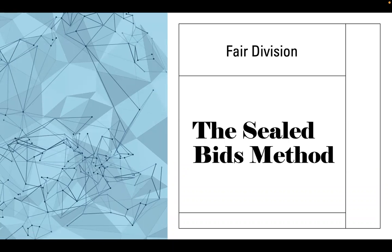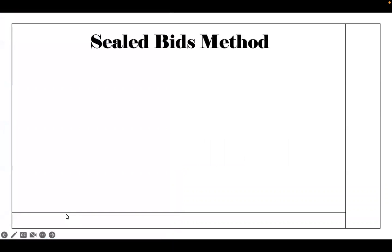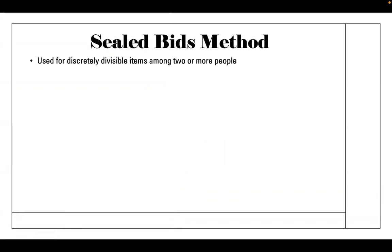Let's talk about fair division, specifically the sealed bids method. The sealed bids method is used for discretely divisible items among two or more people. Think about a house, a boat, a car, a lamp — anything that if you chop it in half is no longer usable. Those are basically discretely divisible items.